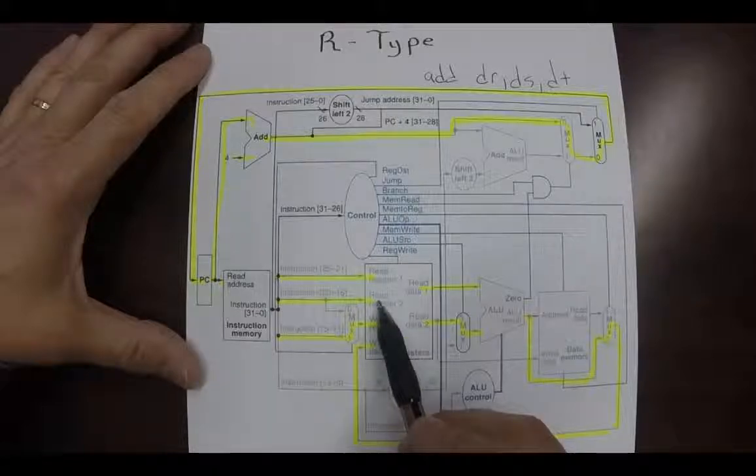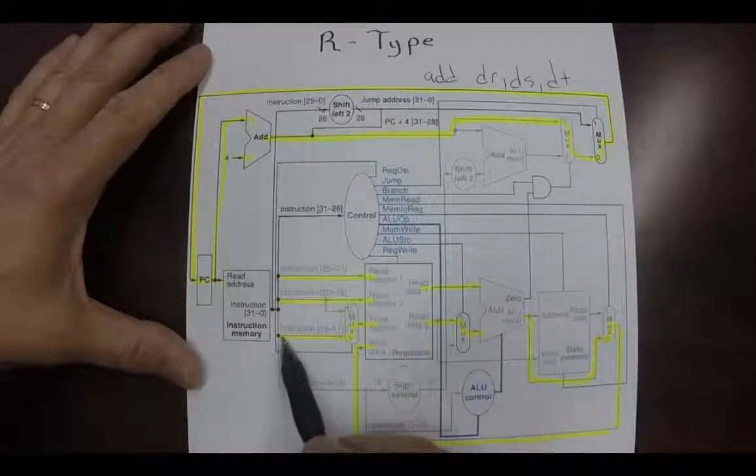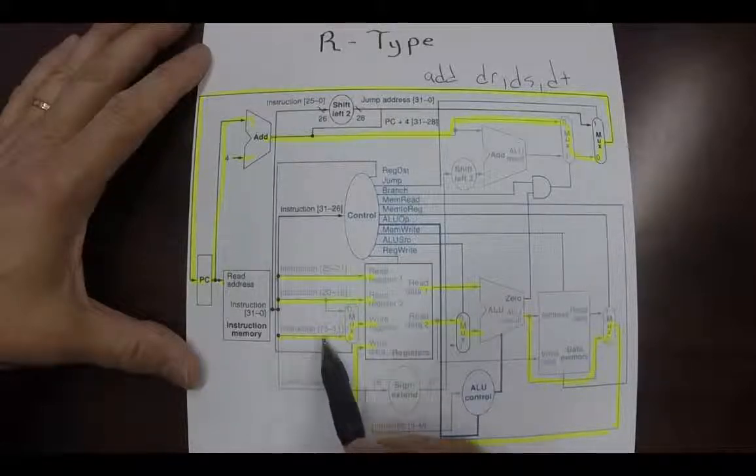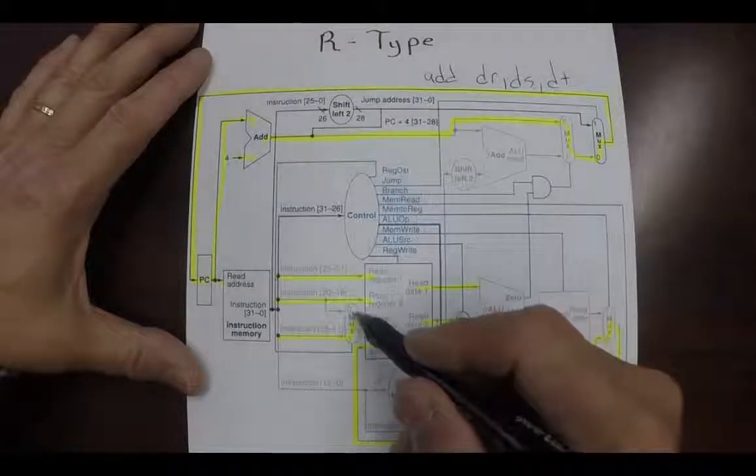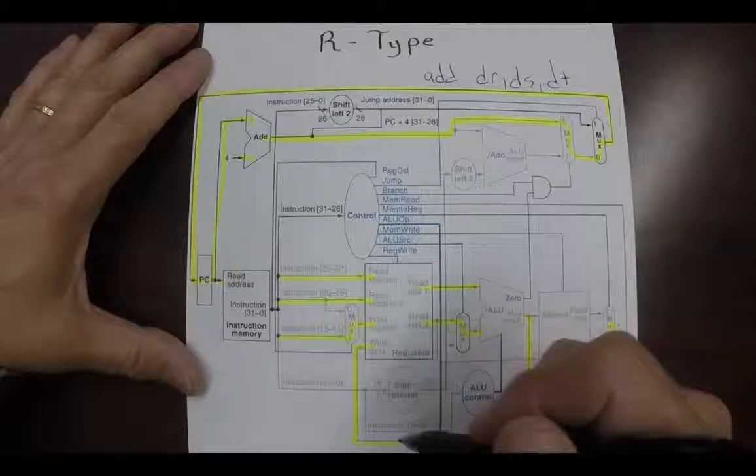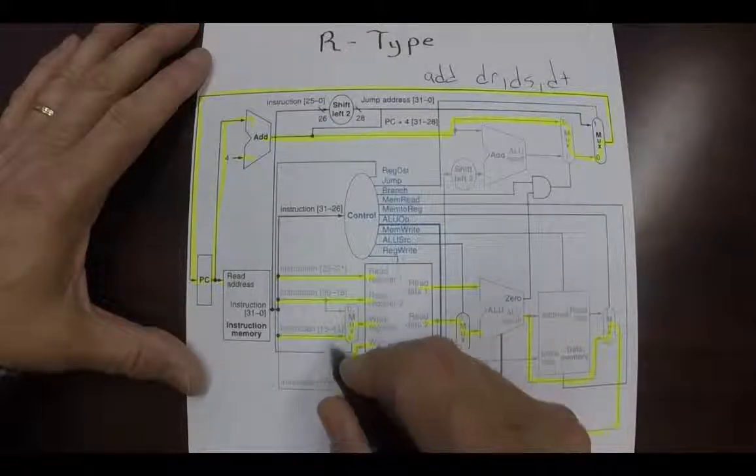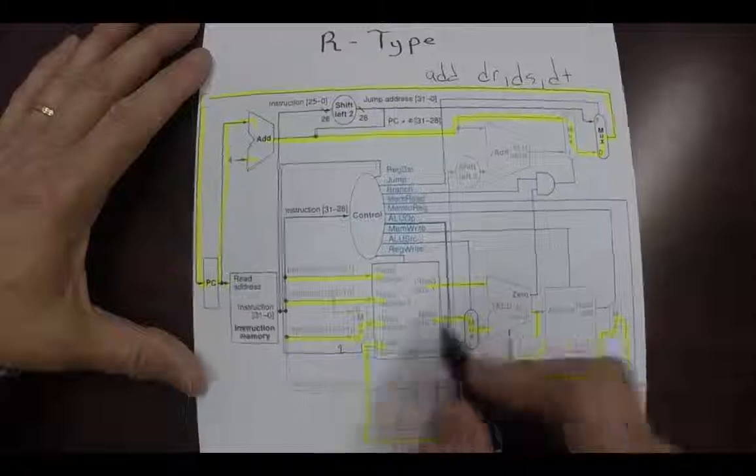The second operand through here. Now the destination register comes in through instruction bits 15 through 11, and this MUX right here that tells it where to get the destination register is turned on to 1 in that write register.